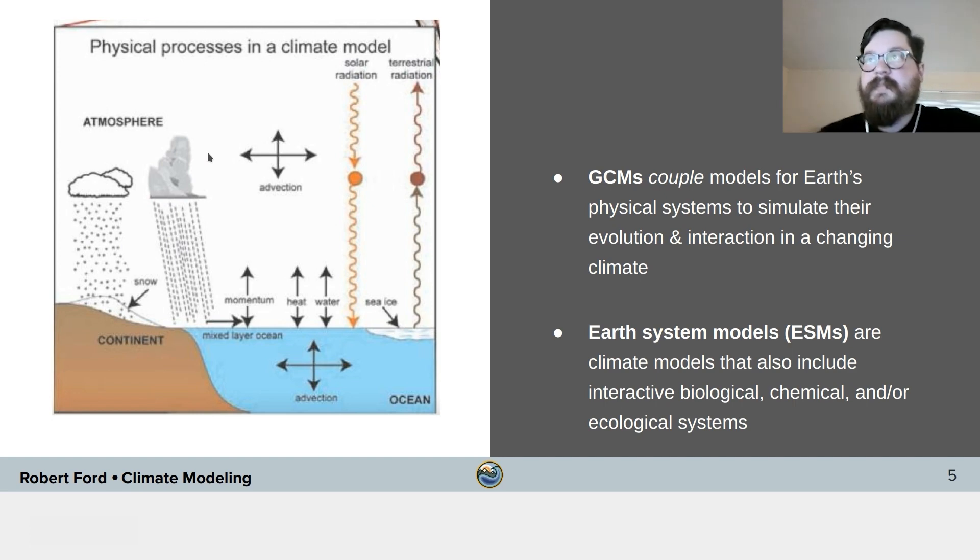Now GCMs are composed of models for each of the climate system's spheres, which are then coupled to model their interactions. Earth System Models add additional complexity by coupling the physical climate system of GCMs to the biological, chemical, and ecological systems that we know or expect are important for climate.